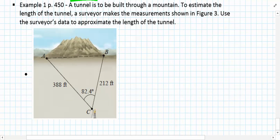Example 1 from page 450 reads: A tunnel is to be built through a mountain. To estimate the length of a tunnel, a surveyor makes the measurement shown in Figure 3. Use the surveyor's data to approximate the length of the tunnel. In this case we have an included angle and two side lengths.